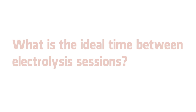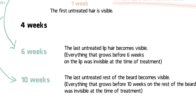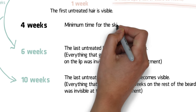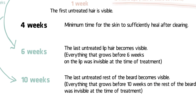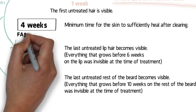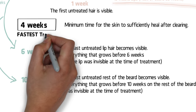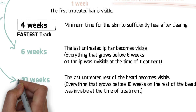Now that we have explained the dynamics of hair regrowth, we can return to the question of time interval between treatments. After clearing an area with electrolysis, you have to give the skin time to heal — it takes about 4 weeks to sufficiently recover. So the minimum time advised between treatments is 4 weeks, dictated by the skin, not the hair cycle. The fastest track is a 4-week interval, but part of the untreated hairs will not have appeared yet, meaning more but shorter sessions. This is the fastest but not the cheapest solution.